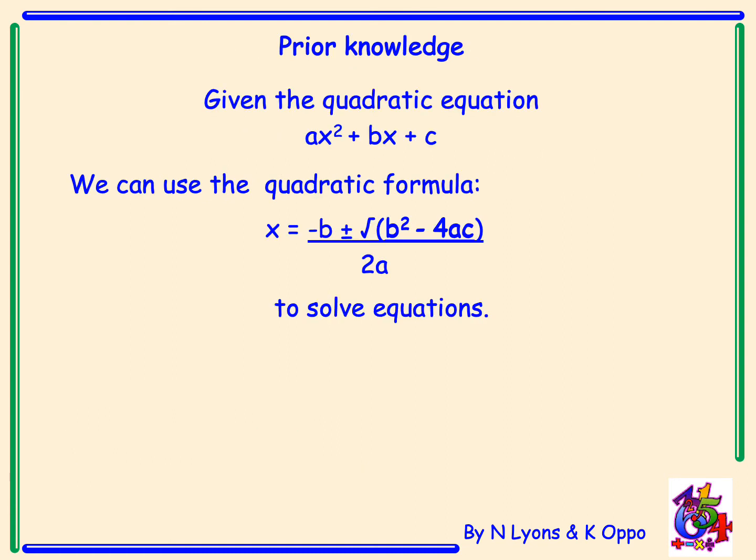What's our prior knowledge? Well, if we're given the quadratic equation ax squared plus bx plus c, then we always know that we can use the quadratic formula — x equals minus b plus or minus the square root of b squared minus 4ac all over 2a — to solve these types of equations, especially if we can't factorise them.